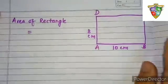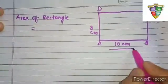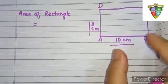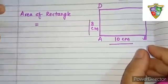Here I have drawn a rectangle which has a length of 10 cm and a breadth of 8 cm, and we are going to calculate the area for the rectangle.